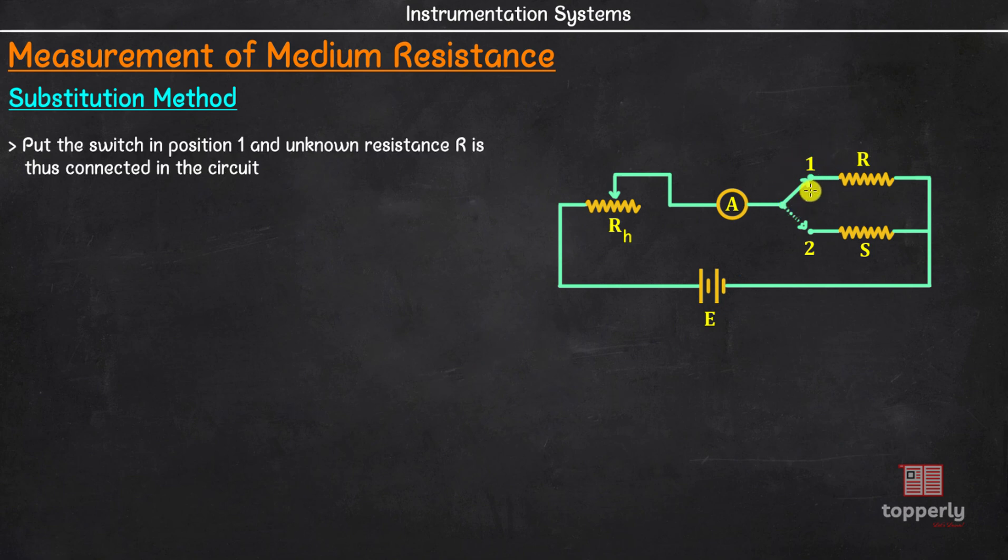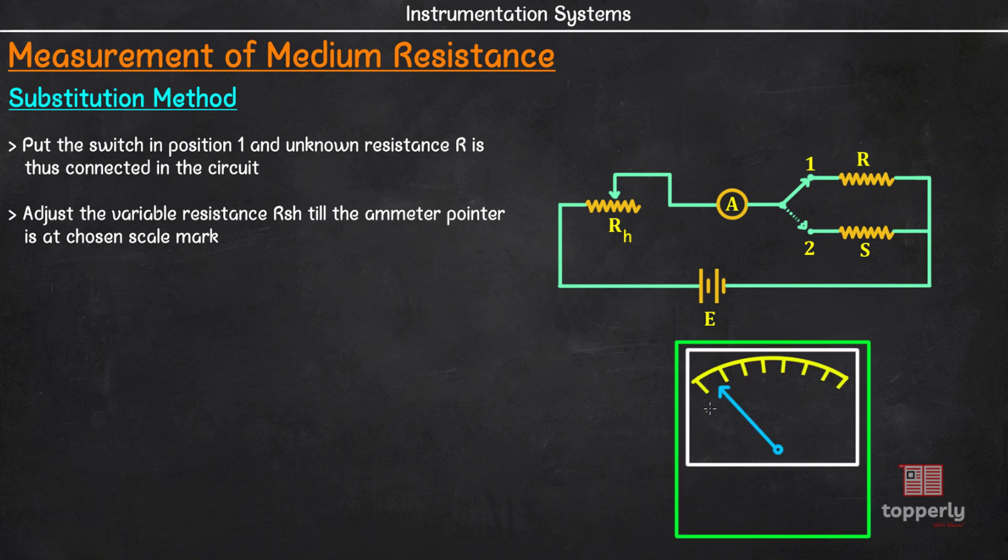First, the switch is put in position 1 and the unknown resistance R is connected to the circuit. Now, the variable resistance RH is adjusted till the ammeter pointer is at a chosen scale mark. For instance, if we take an ammeter scale, it will be having multiple markings. Now, in the absence of RH, let's say the ammeter pointer is at some random position like this. In this case, accurate measurement is not possible. So, we adjust the current in the circuit by adjusting RH to ensure that the ammeter pointer points to a chosen mark. And let's say this is 1 A. Therefore, we can write, current in the circuit I is equal to E by RH plus R and let's name it as equation number 1.